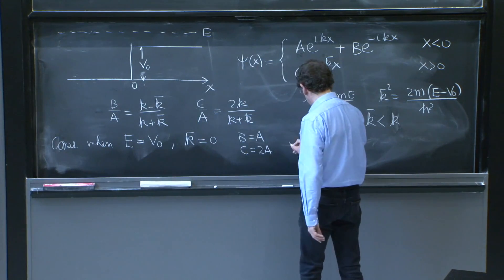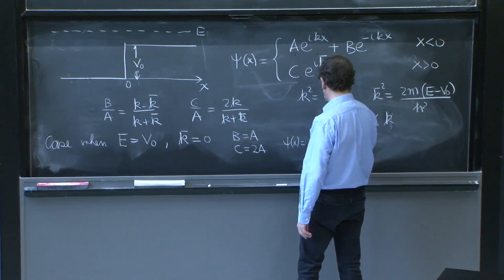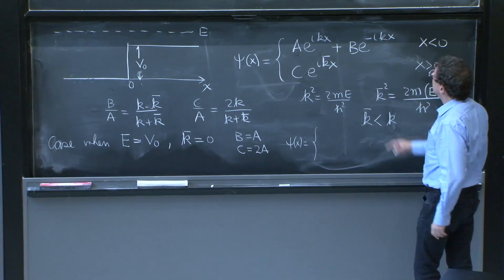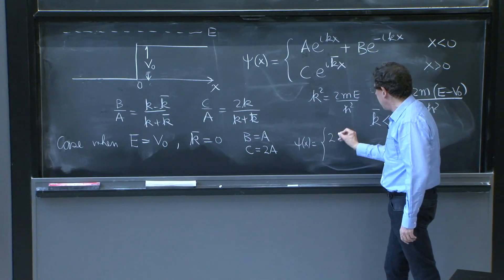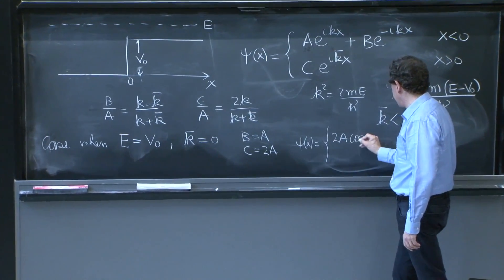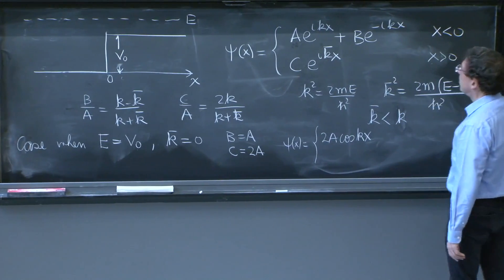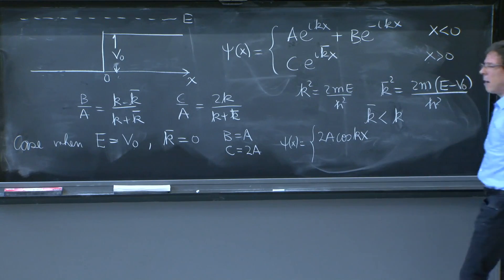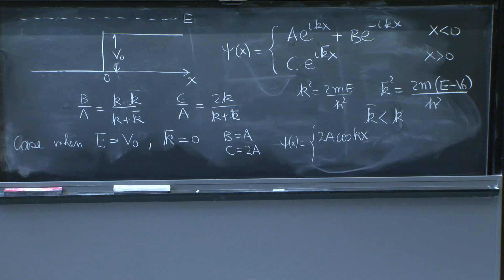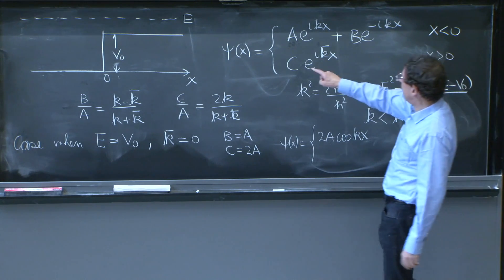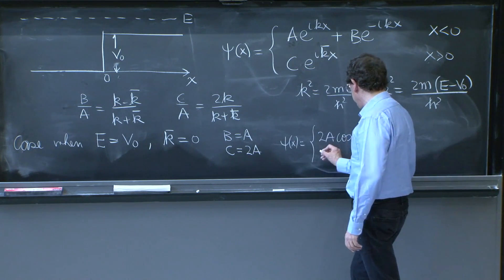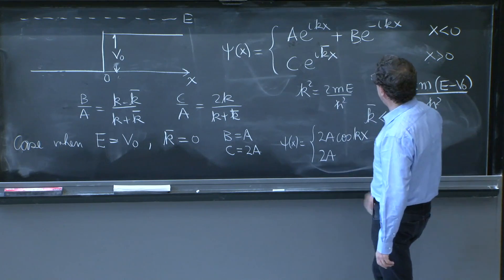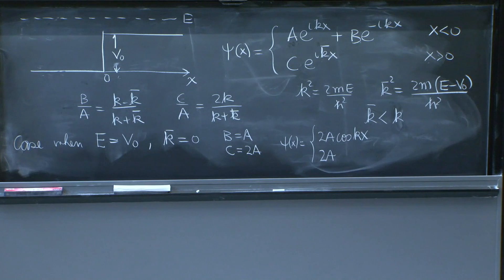And the solution would become ψ(x) equals, well, A is equal to B. So this is twice A times the cosine of kx. When A is equal to B, it's a common factor. Call it A. And this thing is the sum of two exponentials with opposite signs. That gives you the cosine. And for C, you have 2A. And since k̄ is equal to 0, well, it's just 2A. It's a number. This is unnormalizable, but even the original solution is unnormalizable, so we wouldn't worry too much about it.